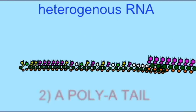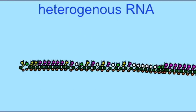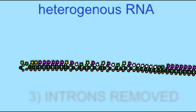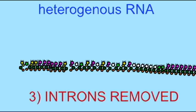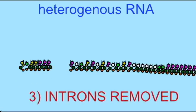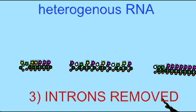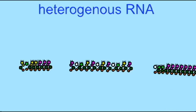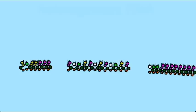Second, a poly-A tail is added. Poly-A simply refers to the presence of a string of adenines, so a chain of adenines are added to the last nucleotides in the hnRNA.